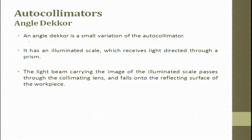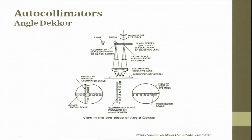The last instrument is the angle decker. An angle decker is a small variation of an autocollimator. It has an illuminated scale which receives light directly through a prism. The light beam carrying the image of the illuminated scale passes through the collimator lens and falls onto a reflecting surface.